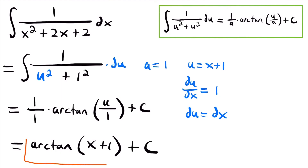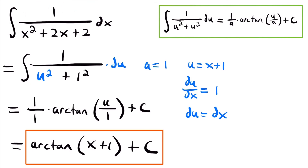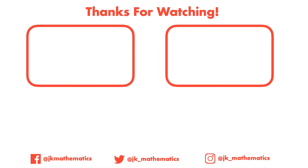That is the final solution to this integral: arctan(x + 1) + C. That is how you take the integral of a rational function where the denominator is a quadratic function and complete the square to use the integration rule for the inverse tangent function. If you have any questions feel free to leave them in the comments, and check out my other calculus videos on the channel.